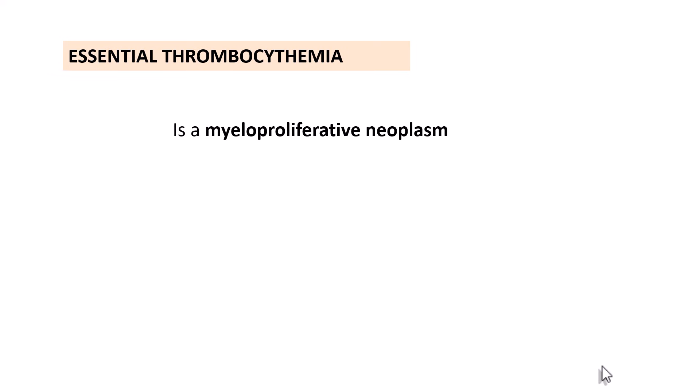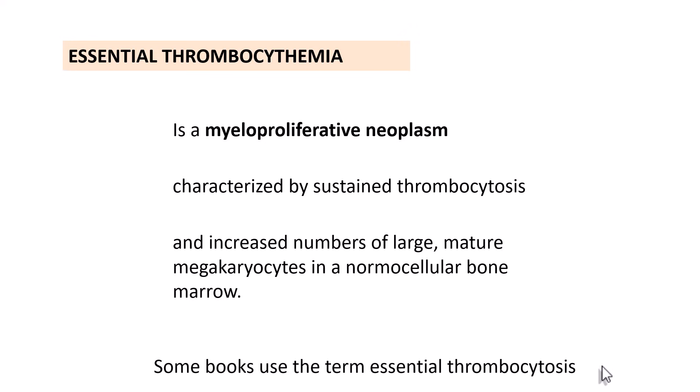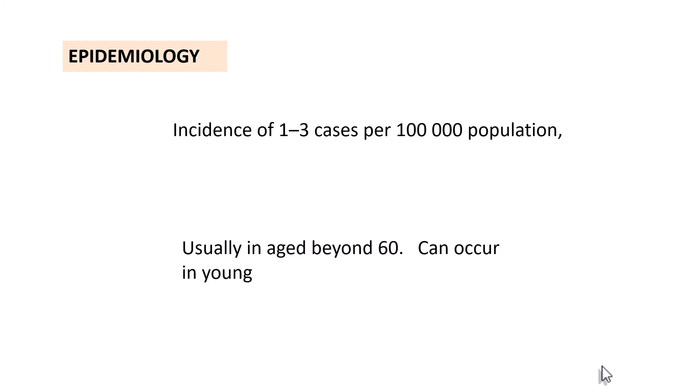Essential thrombocytemia is another myeloproliferative neoplasm, just like CML and polycythemia vera. It is characterized by sustained thrombocytosis, and that is why it is called thrombocytemia. Importantly, there is an increased number of large mature megakaryocytes in an otherwise normocellular bone marrow. Some textbooks use the term essential thrombocytosis, but the correct terminology is essential thrombocytemia.